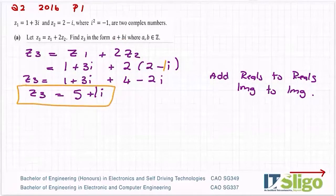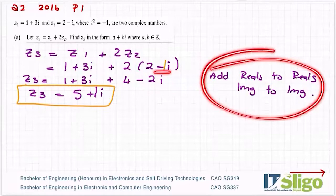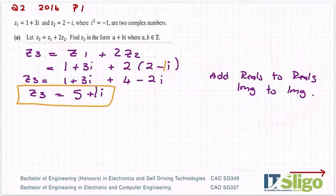So when you're taught to add or subtract complex numbers, it's not overly hard. Just be careful of signs and then this is the key: reals to reals, imaginaries to imaginaries. So 5 plus 1i.